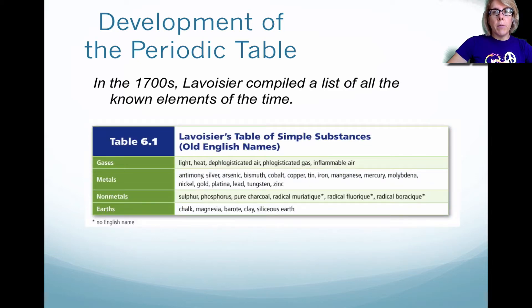So there was a man by the name of Lavoisier in the 1700s, and we talked about him in the last chapter. He decided that he was going to compile all the known elements.